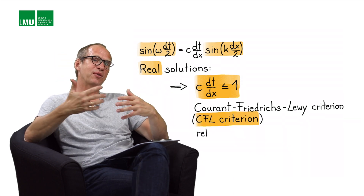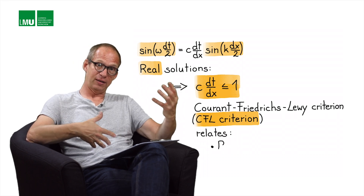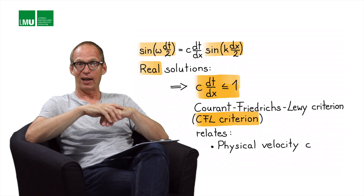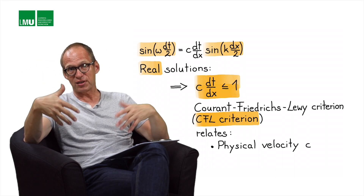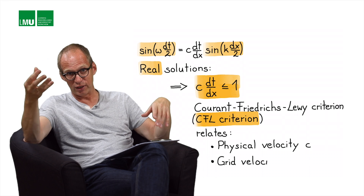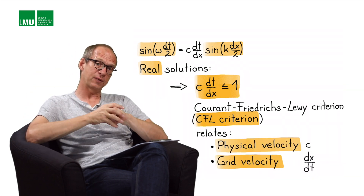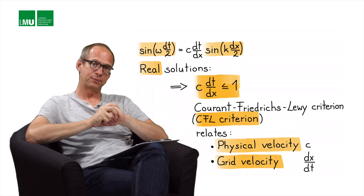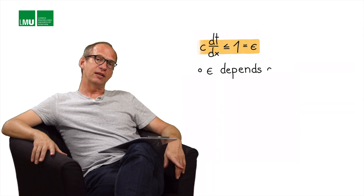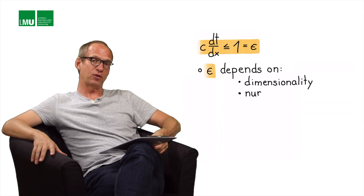The CFL criterion is essentially a ratio of two velocities: the physical velocity c in the medium, and the grid velocity dx over dt relating the grid increment to the time increment. We cannot overstate this result. In more general terms, c·dt/dx must be smaller than epsilon, where epsilon depends on the dimensionality of the problem and the specific numerical method used.